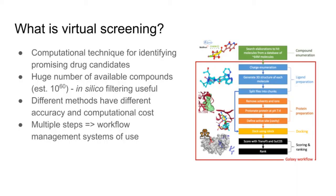One of the first questions that needs to be answered is: what actually is virtual screening? Very briefly, it's a computational technique for identifying chemical structures which are promising drug candidates. The rationale is that there's a huge number of available compounds in chemical space — one number often quoted is 10 to the power of 60 — so some kind of in silico filtering is useful to select compounds which can then be synthesized and tested in vitro or in vivo. Various methods exist with varying accuracies and computational costs, like molecular docking, molecular dynamics, and QSAR, which is essentially a statistical approach.